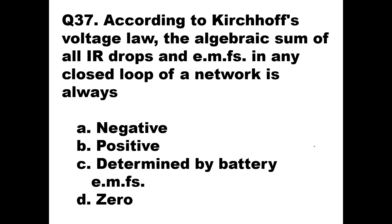Question number 37: according to Kirchhoff's voltage law, the algebraic sum of all IR drops (voltage drops) and EMFs (voltage sources) in any closed loop of a network is always — again the answer is zero, because voltage sources are taken as positive and voltage drops as negative, and they sum to zero in a loop. So the answer is D, zero.